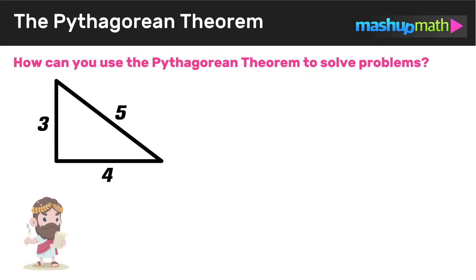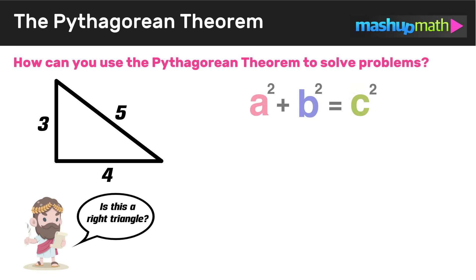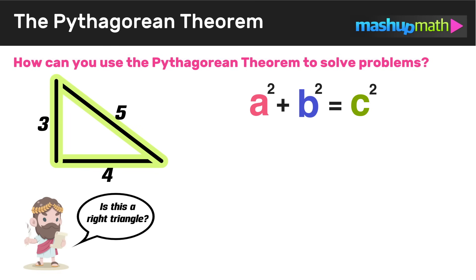Now that you understand the properties of right triangles and what a, b, and c represent, you can start using the Pythagorean theorem. The Pythagorean theorem states that for any right triangle, a squared plus b squared equals c squared, where a and b represent the lengths of the legs, and c represents the length of the hypotenuse — the longest side directly opposite the right angle.